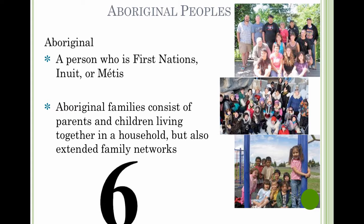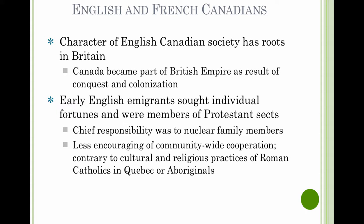The other components of Canadian culture in terms of history include English and French Canadians. The English Canadian society has roots in Britain. The essential character of English Canadians was based on the British Empire, which was focused on colonization and conquest. The early English immigrants' chief family priority was the nuclear family — a very British component. They were less supportive of the cooperation that would have been useful to many other groups in Canada, including Catholics in Quebec and Aboriginals. So it was a fairly closed component of Canadian society at that time.